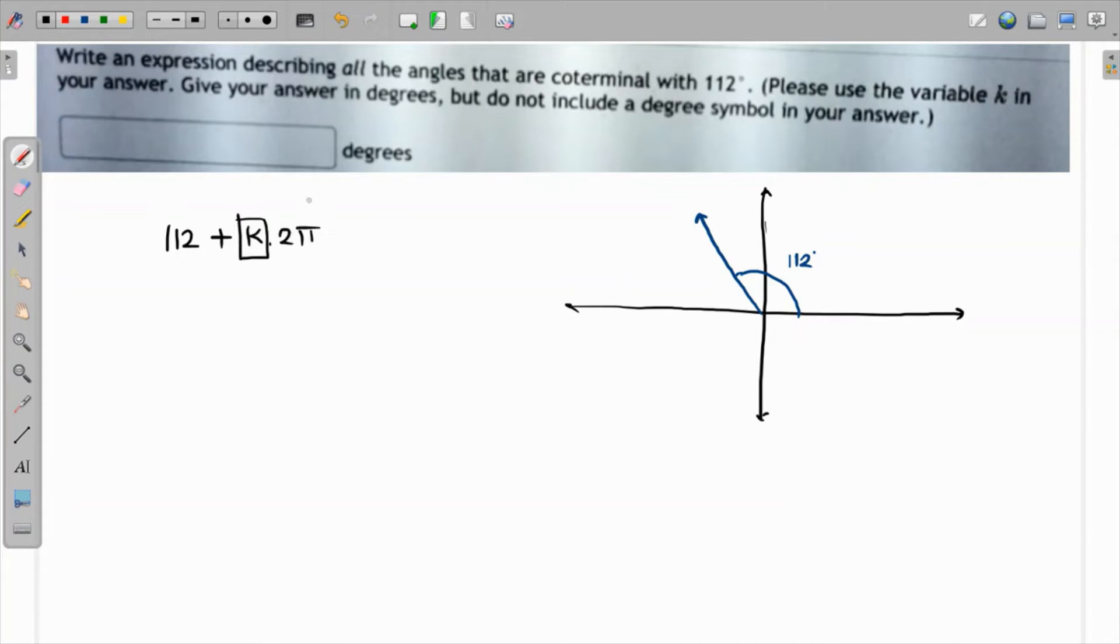Now if k is 1, it means I'm moving anticlockwise once. If k is 2, then I'm moving anticlockwise twice, and so on. If k is 0, that is definitely that particular angle. And if k is -1, I'm moving clockwise for one complete rotation, and so on.